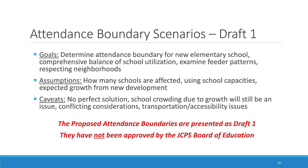To accomplish the goal of a comprehensive balance of utilization, six elementary schools and three middle schools are affected in draft one. We will be using brick and mortar design capacities to help reduce the number of mobile units on some school campuses.